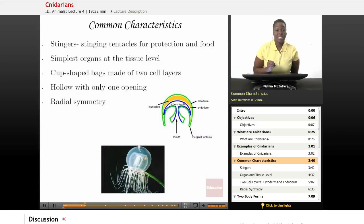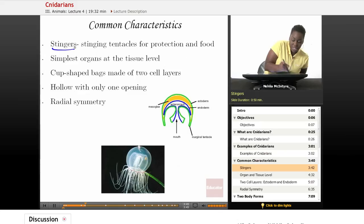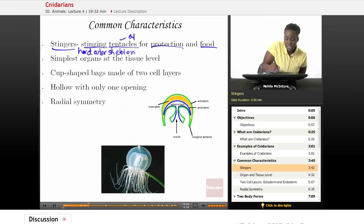Let's talk about common characteristics of Cnidarians. Cnidarians all have stingers, which are cells that help to protect the Cnidarian and also help to gather food. Stingers can be a simple layer of stinging cells or they can make up a hard outer shell or skeleton like in corals. But those stingers can also make up stinging tentacles, which are like arms or appendages that help the Cnidarian gather food and protect itself from predators.